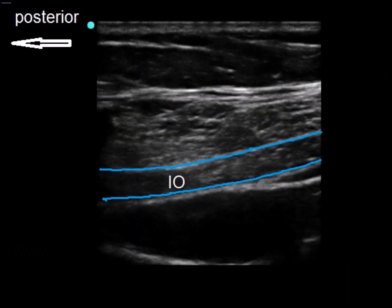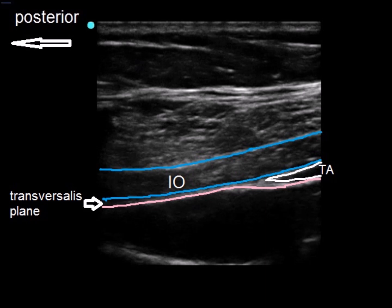Posteriorly, the internal oblique extends to the quadratus lumborum while the transversus abdominis ends at the mid-axillary line, leaving the transversalis fascia just deep to the internal oblique. This plane is known as the transversalis plane. Note: at this region, the extraperitoneal fat is thickened and may be mistaken for muscle.